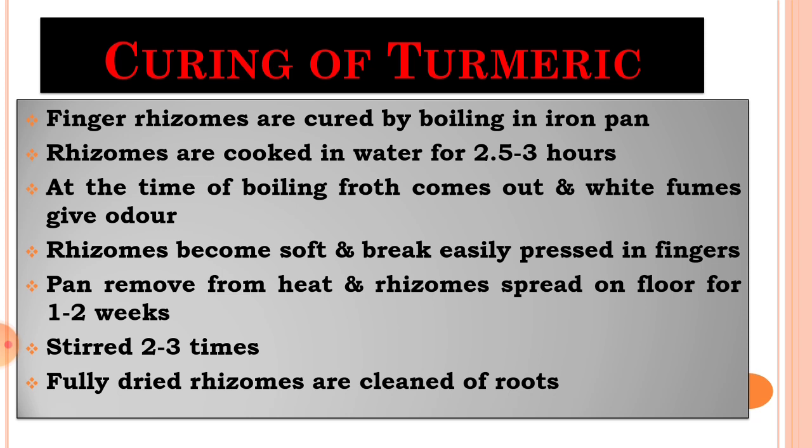First point: the cleaned finger rhizomes are cured by boiling them in an iron pan. Finger rhizomes are used for processing purpose and mother rhizomes are used for planting purpose. The finger rhizomes are cleaned and boiled in an iron pan.